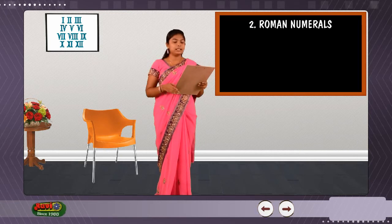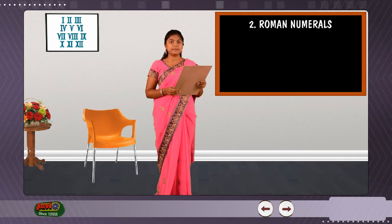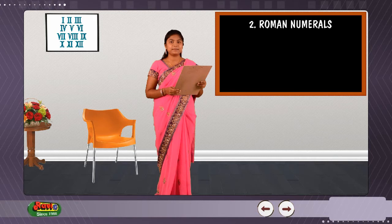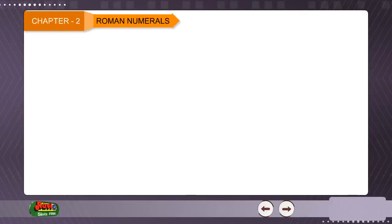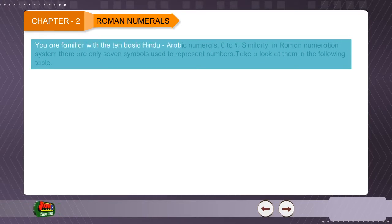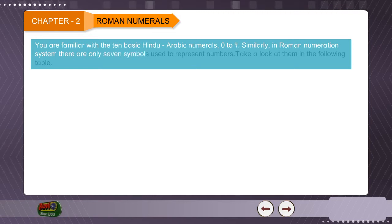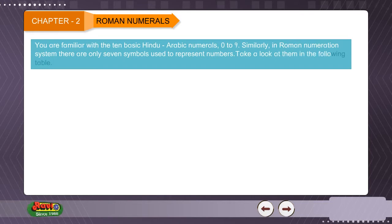In this chapter, you will learn about the Roman numerals. Chapter 2, Roman numerals. You are familiar with the 10 basic Hindu-Arabic numerals, 0 to 9. Similarly, in Roman numeration system, there are only seven symbols used to represent numbers. Take a look at them in the following table.